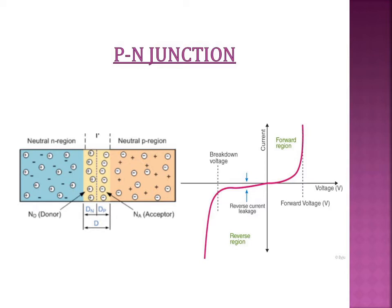Now let's talk about different types of biasing. We generally apply two types of biasing across the diode: forward biasing and reverse biasing. When the P-side of the diode is connected to the positive terminal of a battery and the N-side is connected to the negative terminal, then we say the diode is forward biased. In forward bias, the width of the depletion region is less and carriers move towards the junction. In reverse biasing, when the P-side is connected to the negative terminal and the N-side to the positive terminal, the diode becomes reverse biased. As a result, carriers move away from the junction and the width of the depletion region is more.